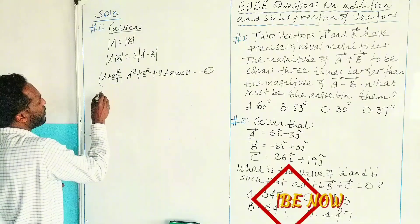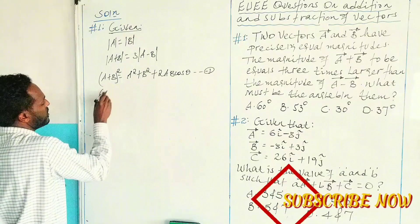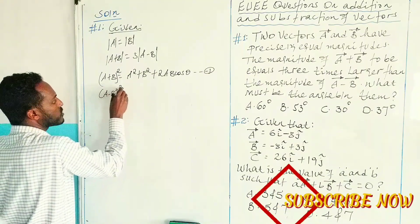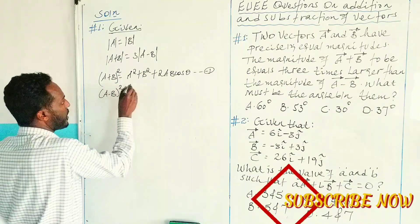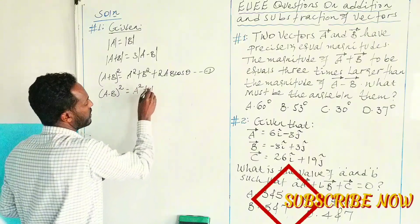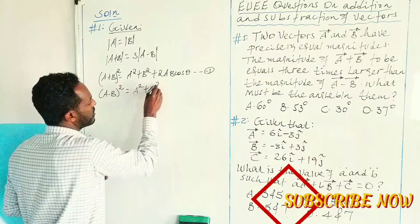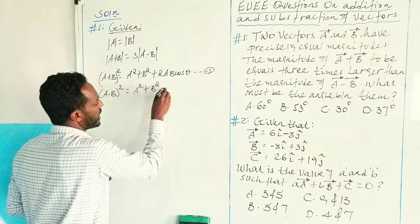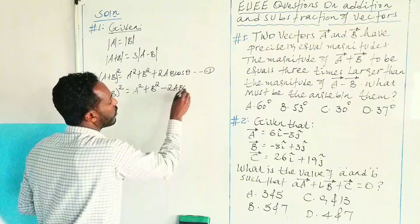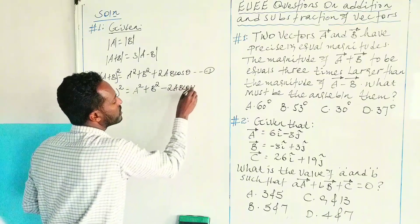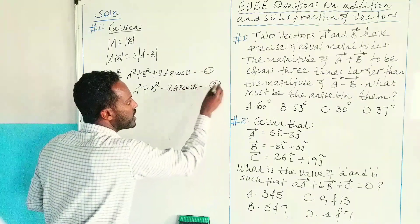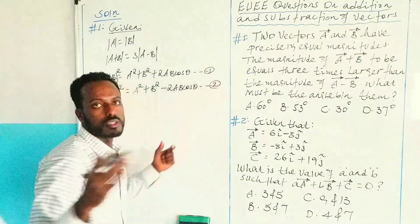And A minus B, the whole square, or R squared, is equal to vector A squared plus vector B squared minus 2 times AB cos theta. We can say this is equation 2.